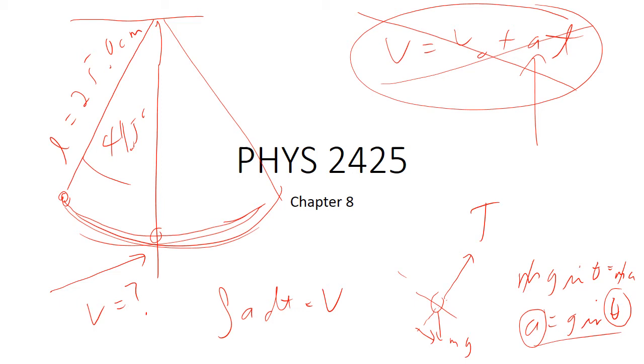So we say, well, how else can we do the problem? Well, gravity is the force acting on this. Tension is only responding to the gravity. So gravity is the force that's making it move. Gravity is a conservative force. So that means that we can say that the initial kinetic plus the initial potential equals the final kinetic plus the final potential.